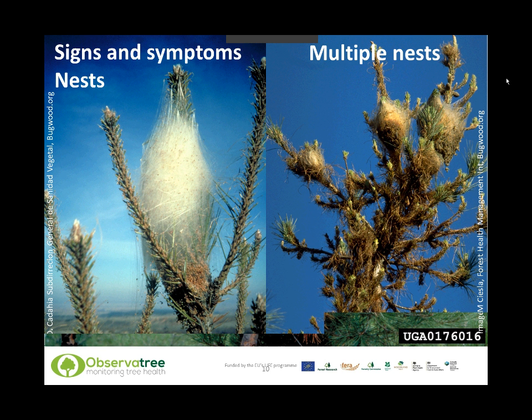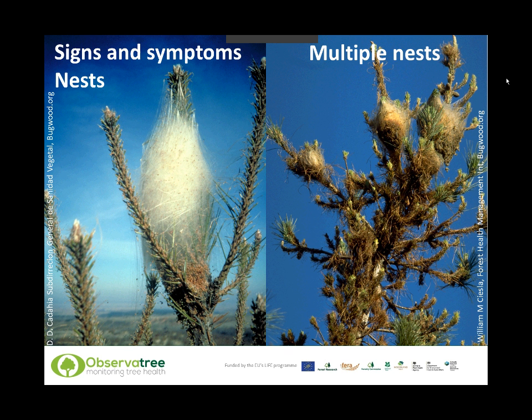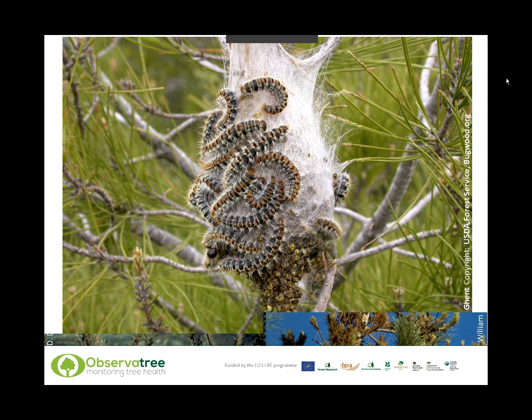Another major sign of the moth are the nests that the caterpillars construct high up in the pine trees. They are white, silken and tent-like, built around January time. The caterpillars overwinter inside them and they can get to the size of a football. Here on the left-hand side you can see a fairly fresh nest — it's very white and very clean looking and easy to see. There can be several nests in one tree, as you can see on the right-hand side, and you can also see severe feeding damage in that photo. Here you can see another nest where the caterpillars are present and crawling around on the outside.